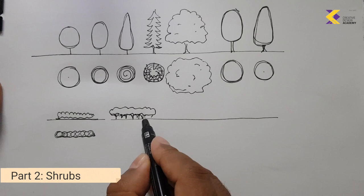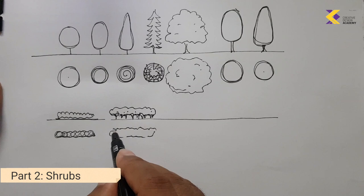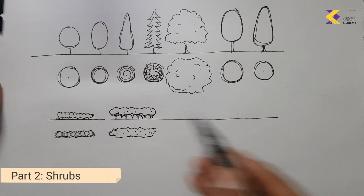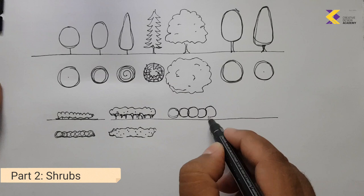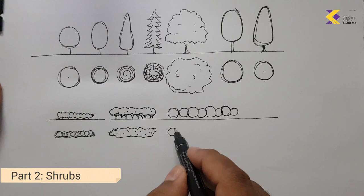We make the foliage in elevation first and then, matching to that, we make the plan form. You can observe how these small shrubs are interconnected and overlapping at times, making it easy to create a profile that is not just circle after circle but a combination of different circles forming a linear foliage.